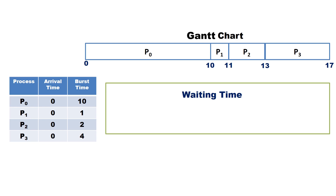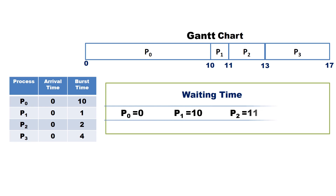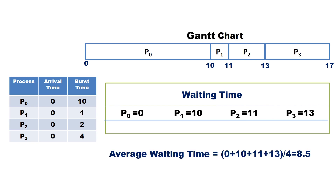Waiting time is the time each process spends in the ready queue waiting for the CPU. P0 arrived at time 0 and started executing at time 0, so waiting time is 0. P1 arrived at time 0 but was allocated the CPU at time 10, so waiting time for P1 is 10. Similarly, waiting time for P2 is 11 and for P3 is 13. Hence the average waiting time is (0 + 10 + 11 + 13) / 4 = 8.5.